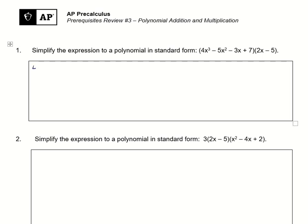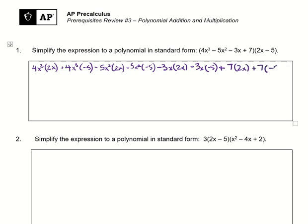We'll start by distributing 4x to the third power: 4x³ times 2x, plus 4x³ times negative 5. Then distribute the negative 5x²: negative 5x² times 2x, minus 5x² times negative 5. Distribute the negative 3x: minus 3x times 2x, and minus 3x times negative 5. Then distribute the 7: plus 7 times 2x, plus 7 times negative 5.